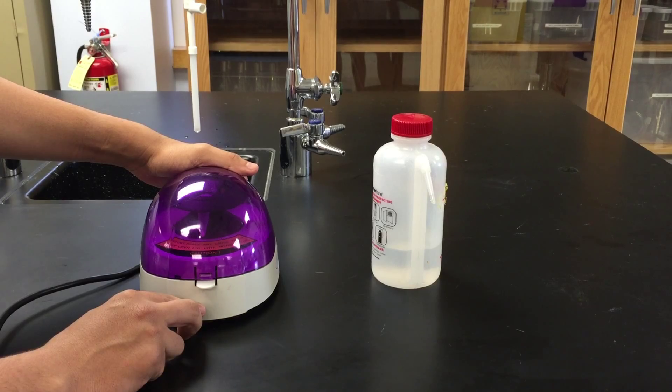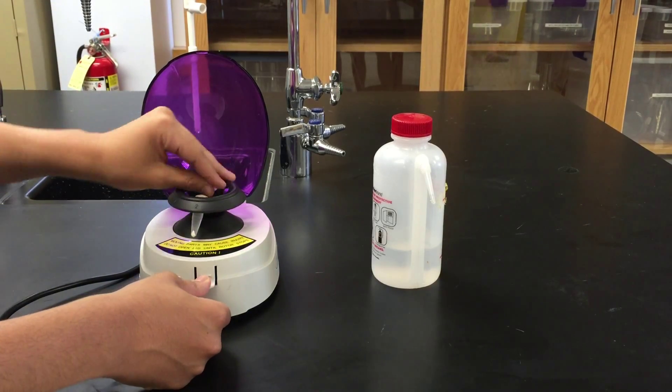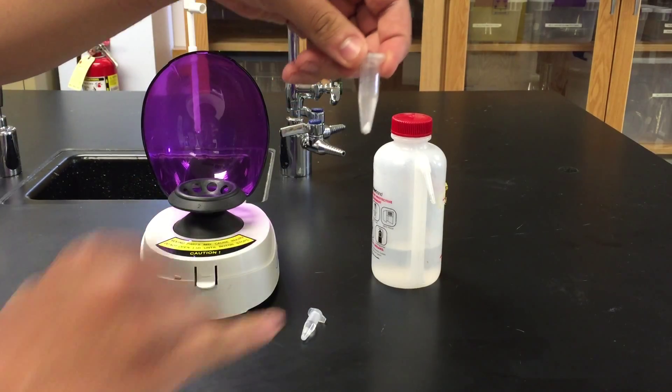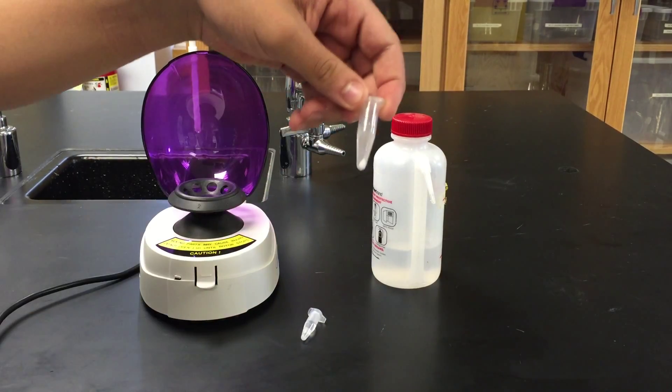After a couple seconds, turn it off and remove the two test tubes. You can clearly see that the precipitate has collected on the bottom, and what's on top is known as the supernatant liquid.